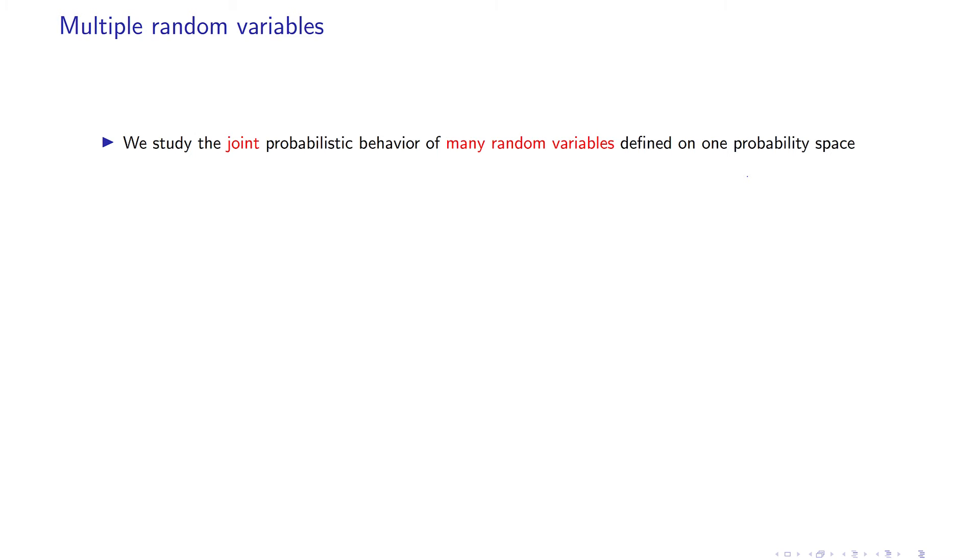We will study the joint probabilistic behavior of many random variables defined on one probability space. For instance, suppose that a particle will hit a random point inside a circle—here, or here, or here.